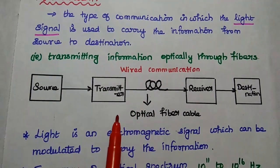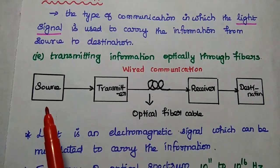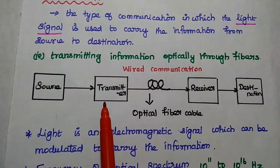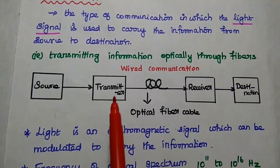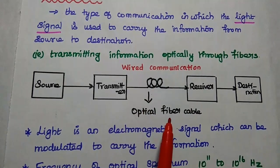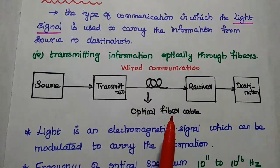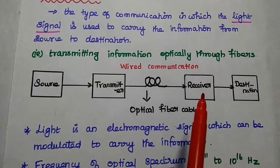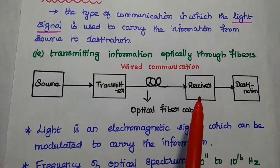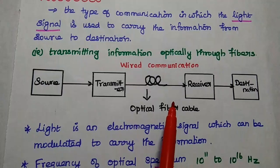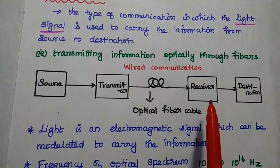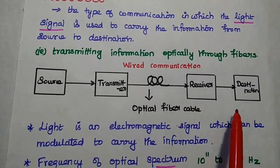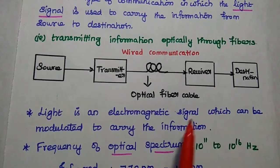This is the basic structure of optical communication. Source generates the original information to be transmitted. Here the transmitter converts the electrical signal into optical signal. Optical fiber cable is the communication medium through which we can transmit the signal from one place to another place. Next one is receiver. Here we are using photodetector to detect the received signal. It converts the received optical signal into the electrical signal. Then the last one is destination where we can receive the original information from the source.